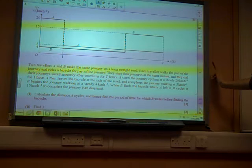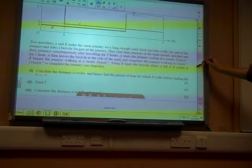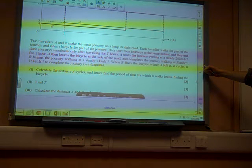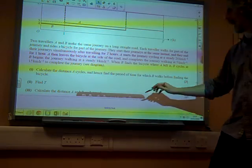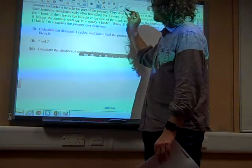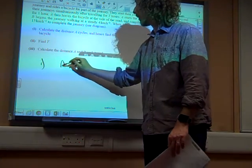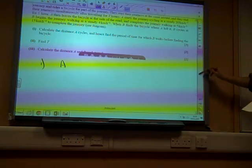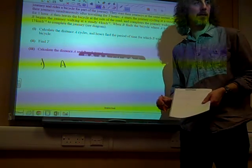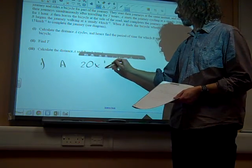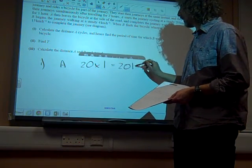Calculate the distance A cycles, and hence find the period of time B walks before finding the bicycle. So the first thing, person A begins by cycling at 20 kilometres an hour for one hour. That's not a terrifically difficult thing to work out. 20 kilometres an hour for one hour is 20 kilometres.